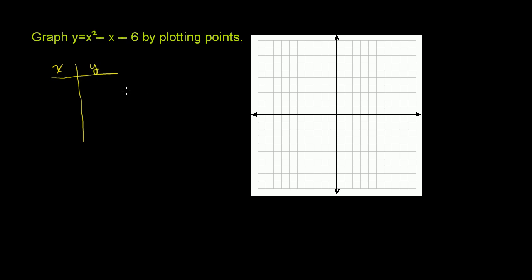Let's start x at negative 3. So if x is negative 3, then y is going to be negative 3 squared which is 9, minus negative 3, so that's plus 3, minus 6. So what is that? 9 plus 3 is 12 minus 6. This is equal to 6.